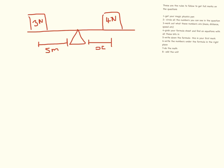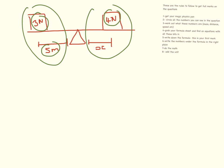A lot of questions for this are going to be pictures that you have to identify, but apply exactly the same rule — circle all of the numbers. Everything on this side has to equal everything on this side. Let's do the first side first: moment equals force times distance. Our force is 3, our distance is 5, so that equals 15.